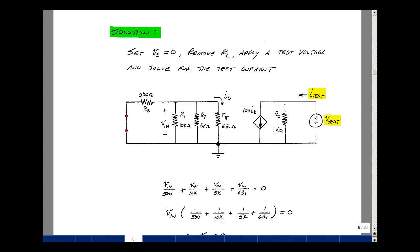Let's say the voltage across here is V-in. The current leaving the node would be this current, which would be V-in divided by 500, plus this current, V-in divided by 10k, plus this current, V-in divided by 5k, plus V-in divided by 631 ohms.